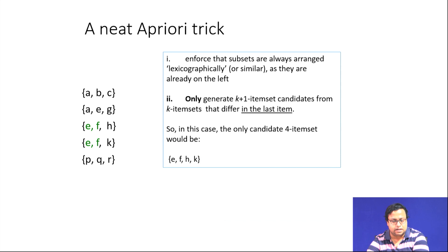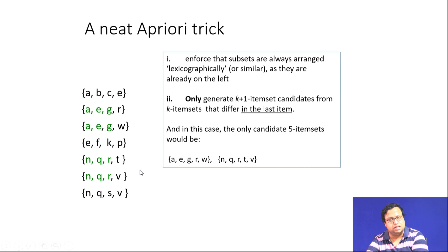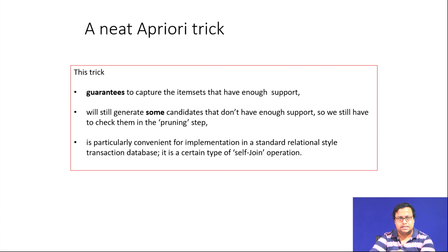The algorithm arranges subsets lexicographically and only generates K+1 item sets from K item sets which differ in the last item. In this case, only combinations like A, E, G, R, W and N, Q, R, T, F are considered — only the last item changes while the first three items are put in lexicographically. This trick guarantees capturing items with enough support, though some candidates without enough support will still be generated and checked in the pruning step. This is particularly convenient for implementation in a standard relational or transactional database.